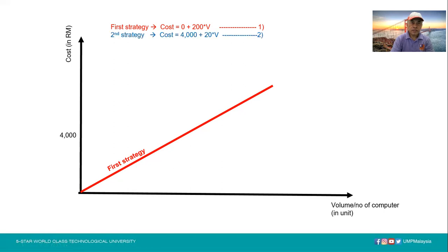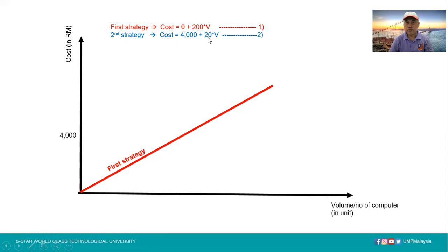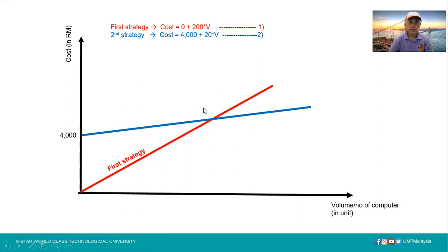For the second strategy, the fixed cost is 4,000 ringgit. So the total cost equals 4,000 plus the variable cost, where the variable cost is 20 ringgit per computer. Therefore, the equation is: total cost = 4,000 + 20 times volume.